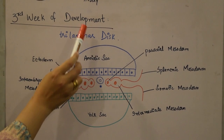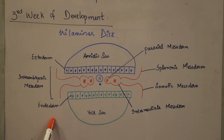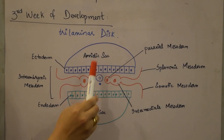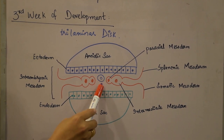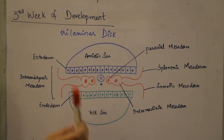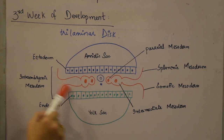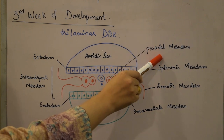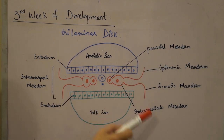Starting with embryonic folding: at the third week of development, a trilaminar disc develops consisting of ectoderm, mesoderm, and endoderm. The ectoderm consists of a single layer of epithelial cells; underneath is the neural tube, and below that is the notochord, which develops into the nucleus pulposus inside the vertebral discs. Underneath the ectoderm is the intra-embryonic mesoderm, divided into three parts: paraxial mesoderm, responsible for formation of dermatomes, sclerotomes, and myotomes.